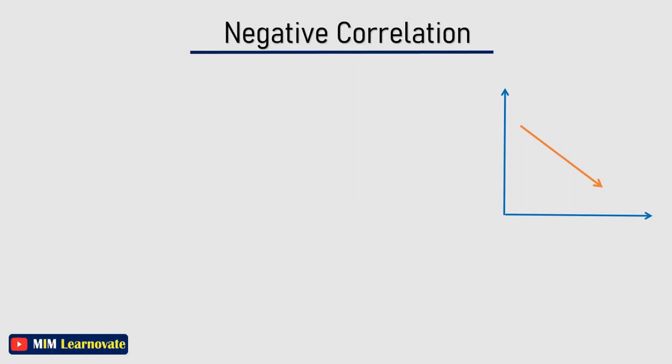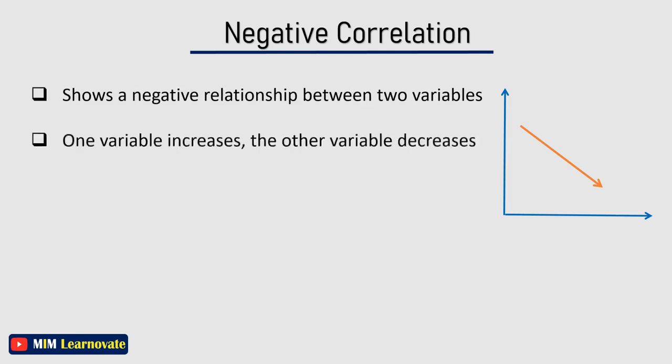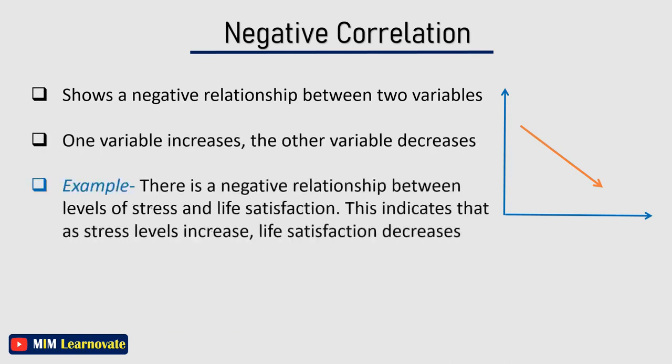A negative correlation shows that there is a negative relationship between two variables. In this kind of correlation, as one variable increases, the other variable decreases. For example, there is a negative relationship between levels of stress and life satisfaction. This indicates that as stress levels increase, life satisfaction decreases.